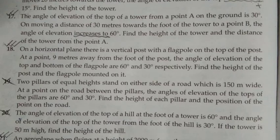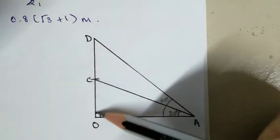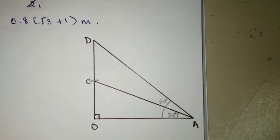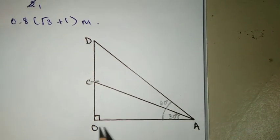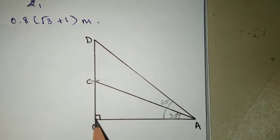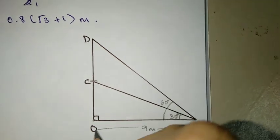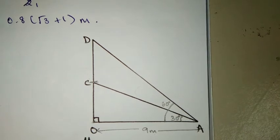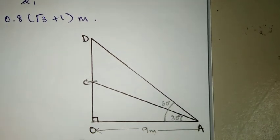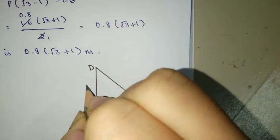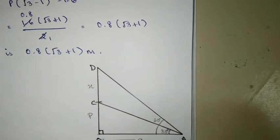Let's move on quickly to question number 18. On a horizontal plane there is a vertical post with a flagpole on top of the post. At a point 9 meters away from the foot of the post, the angle of elevation of the top and bottom of the flagpole are 60 degrees and 30 degrees respectively. Find the height of the post and the flagpole mounted on it. Here's the diagram, you have the post and on top there's a flagpole. Whenever you have two things on top of each other just know that it's of type 3, okay.